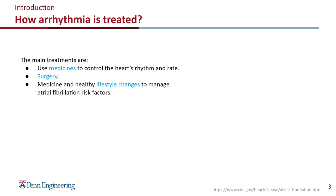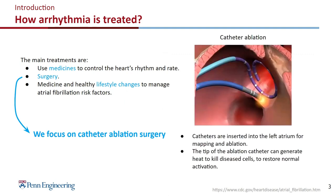There are several treatments. The major ones are medicine, surgery, and lifestyle changes. We focus on catheter ablation surgery. During the surgery, catheters — which I'm showing in my hand here — are inserted through the vein to the heart. This is a mapping catheter; it has electrodes on it and it records endocardium electrograms. Based on that information, physicians go in with an ablation catheter. The tip of the ablation catheter generates heat to kill abnormal cells and restore normal activation.